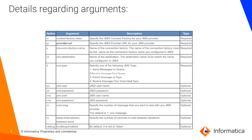This is the details regarding the arguments. You need to get all this information from your JMS admin. One thing to note: the hyphen t argument is used to specify the JMS type. If you specify value as 1, you can send a message to the queue. If you specify value as 2, you can receive a message from the queue. You can also enable debug using the hyphen debug option. I will show all the usage of these arguments in the demo.